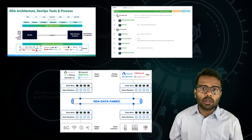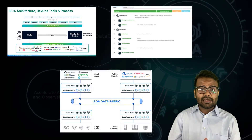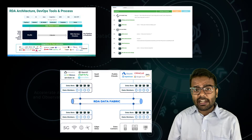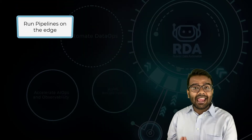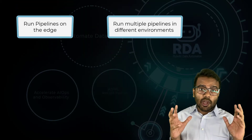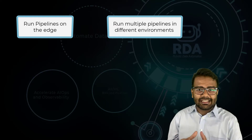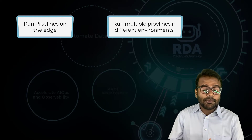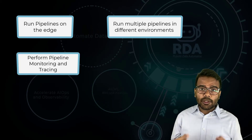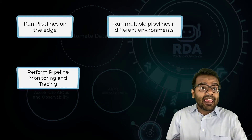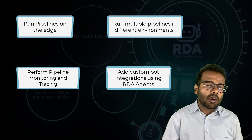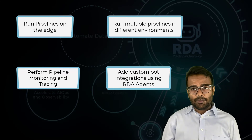This is only a small intro to what RDA is and its capabilities, but there's a lot more. RDA can run pipelines on the edge, run multiple pipelines at different locations, and have these pipelines talk to each other and exchange data securely. You can also track and monitor the execution of your data pipelines from anywhere in the world, and integrate custom bots to your already existing data pipelines as well.